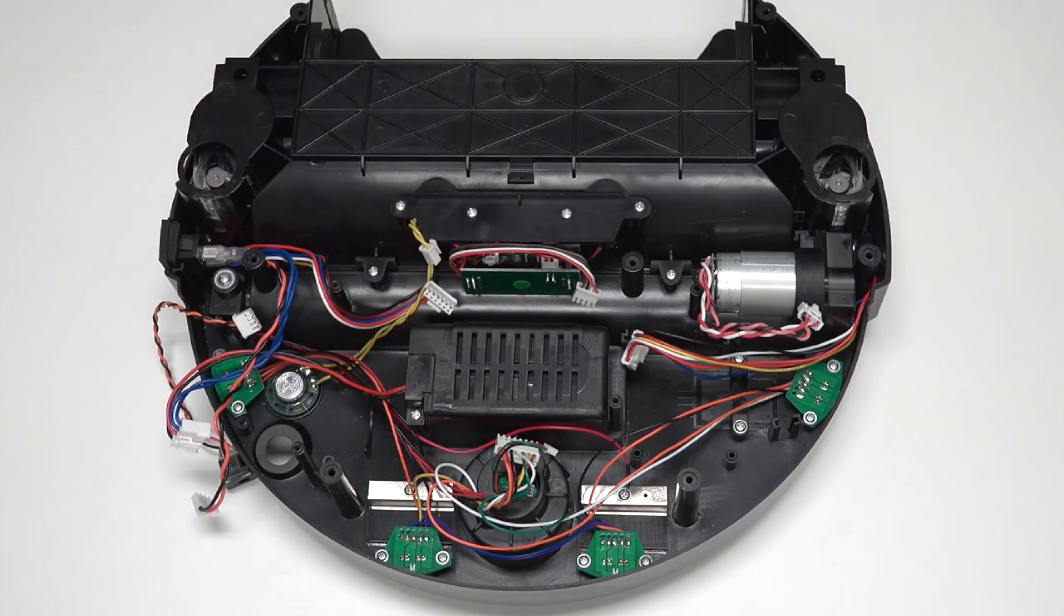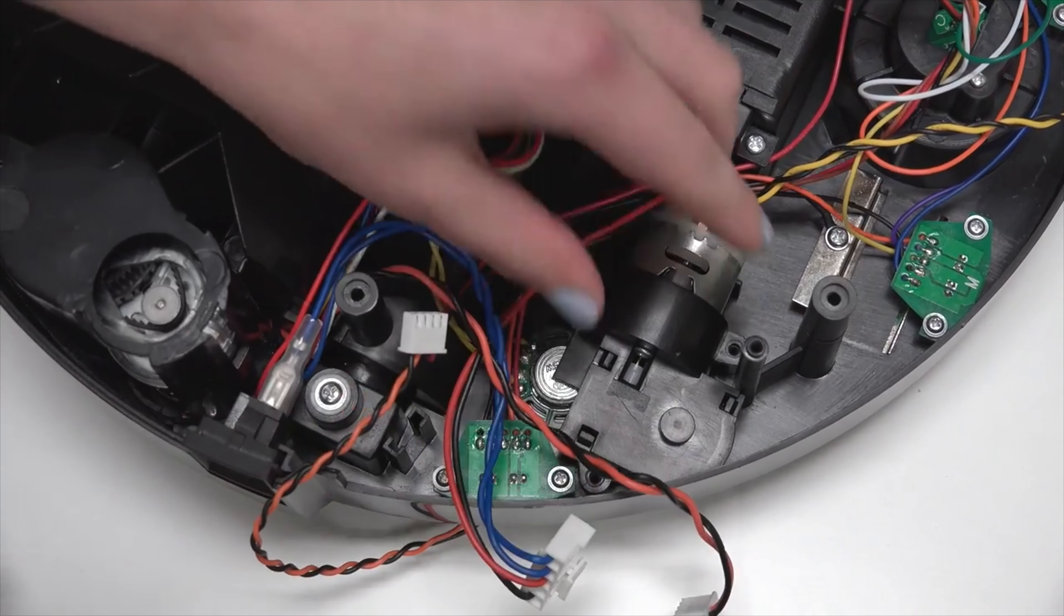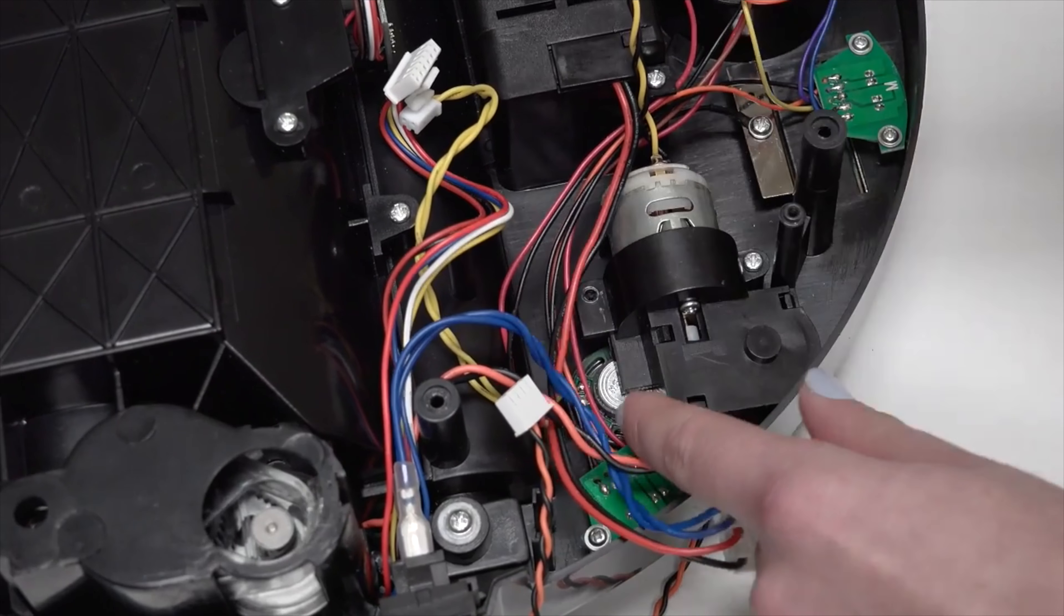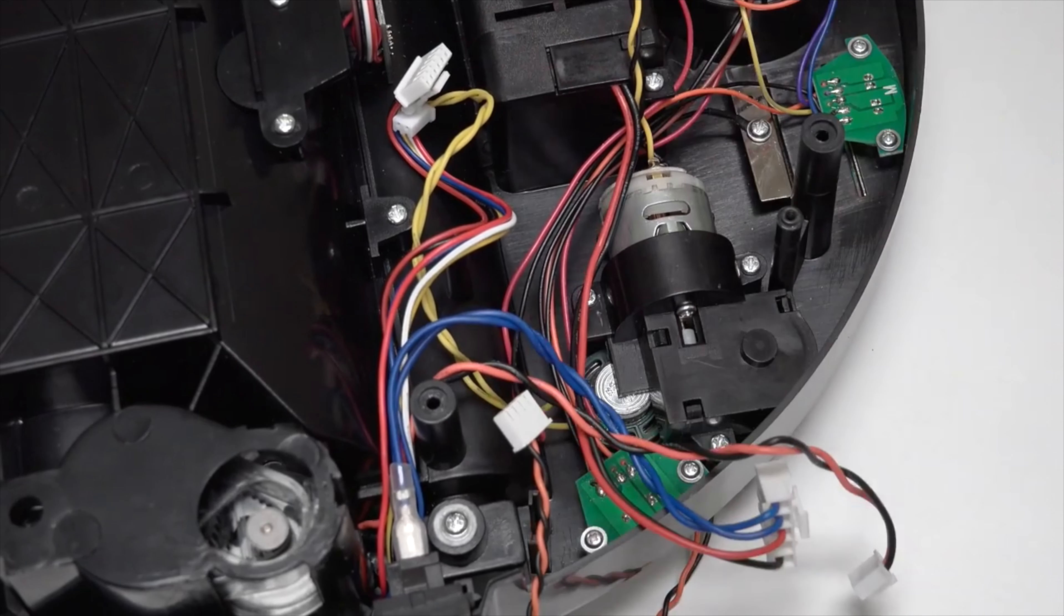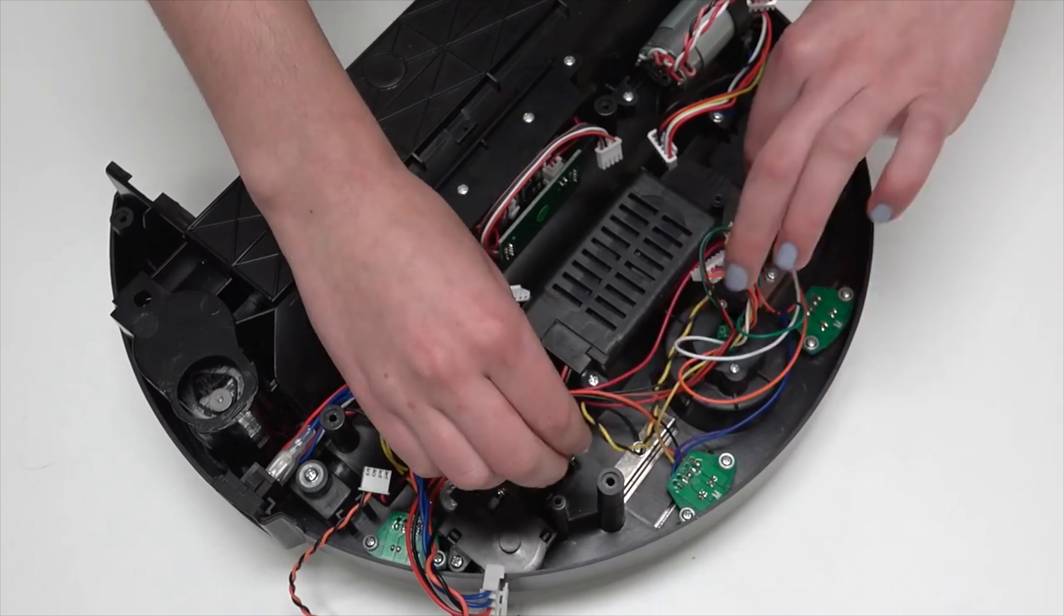Place the new side brush motor in the open space, in line with the screw posts. Push down until the motor sits flat, then reinstall all three screws. Feed the motor's wiring so it reaches over to Bob's left side before replacing the mainboard.